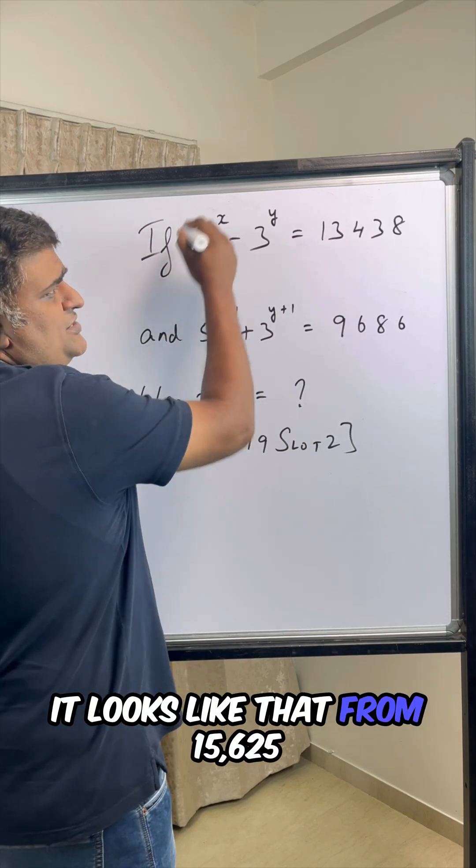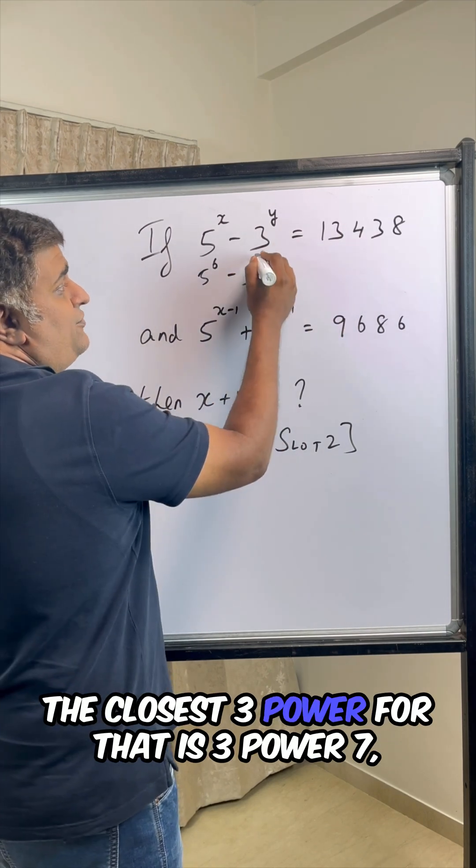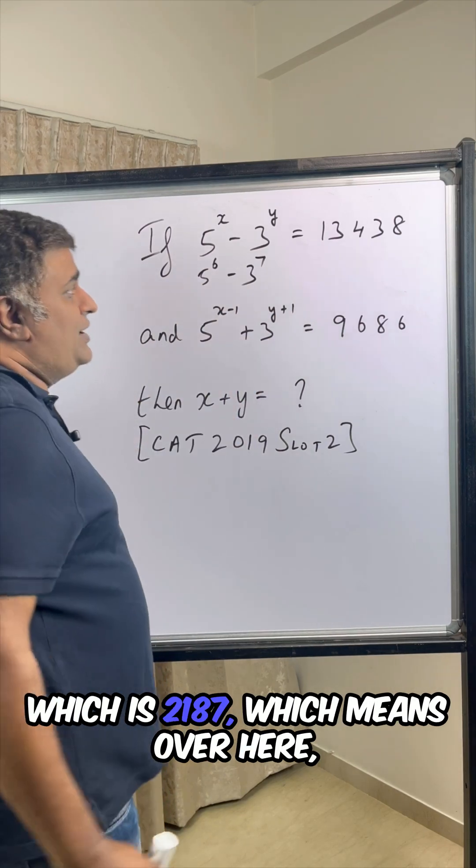It looks like that. From 15,625, something around 2,000, the closest 3 power for that is 3 power 7, which is 2,187.